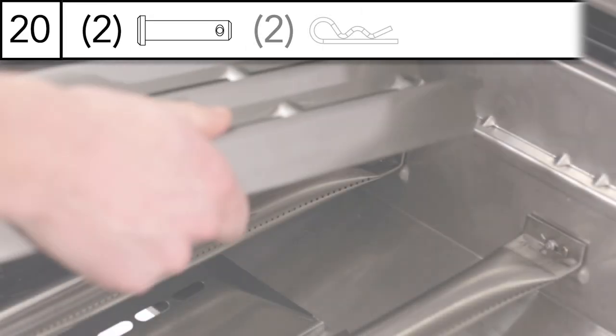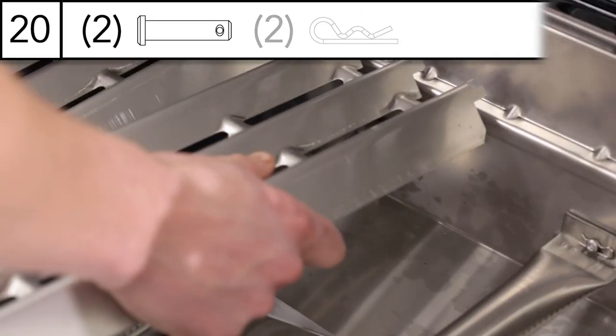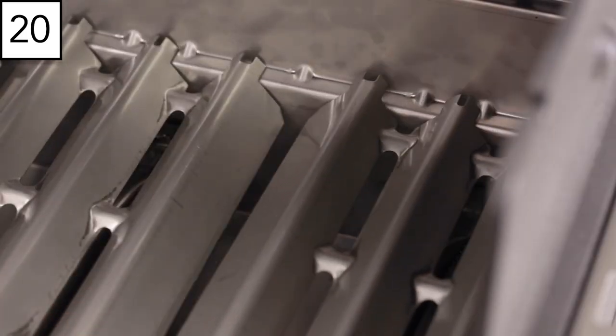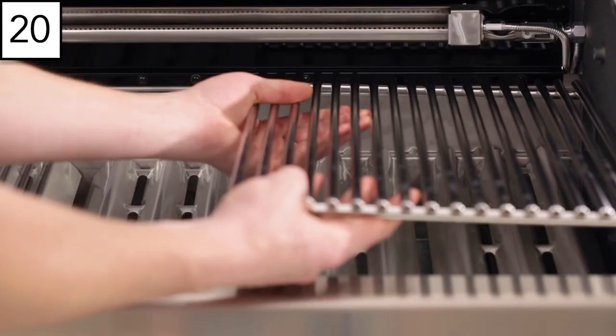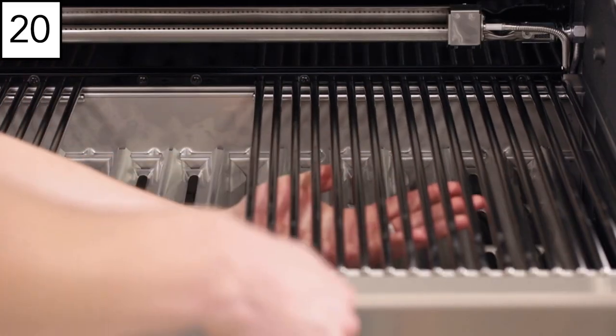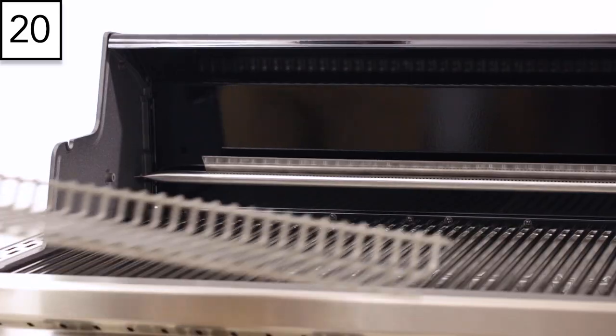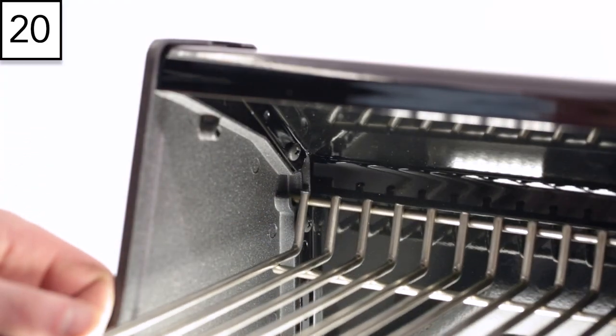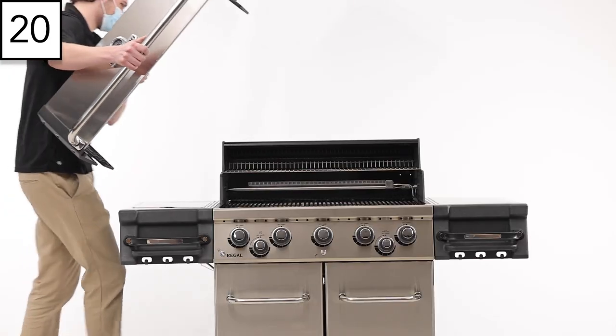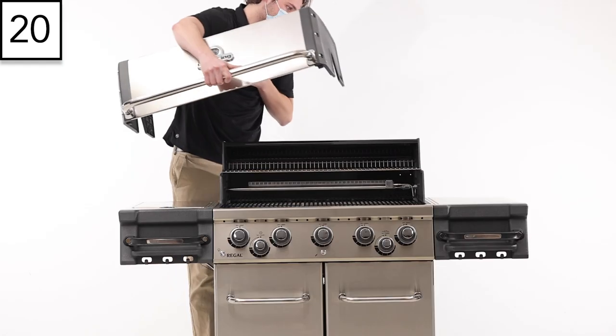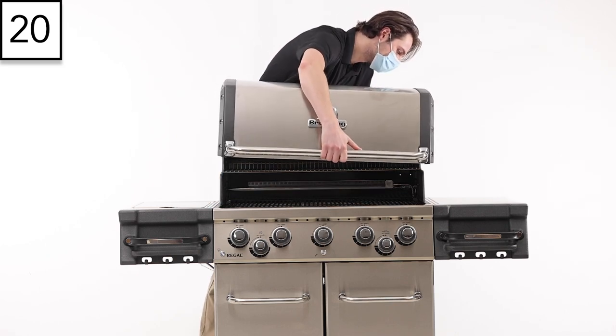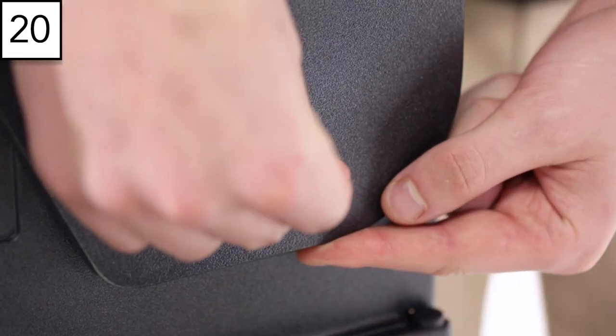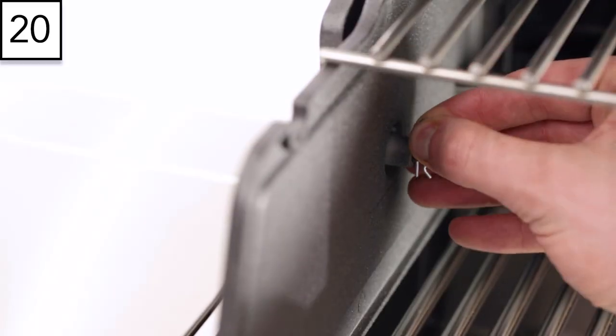Step 20: Insert the flavor waves, cooking grids, and warming rack. Ensure the rack is resting in the proper grooves. Attach the cook box lid using the hardware provided. Ensure to clip the hinged cotter pins into place.